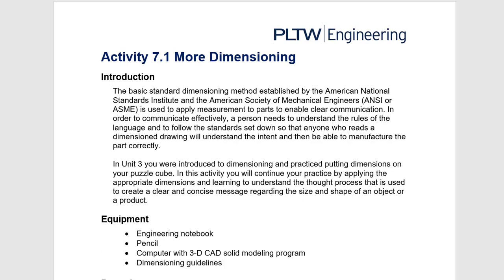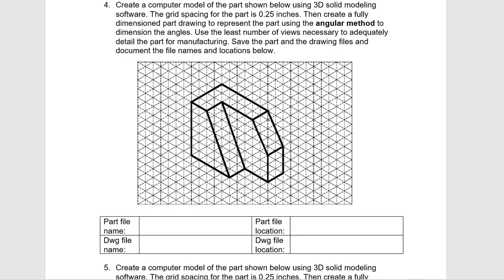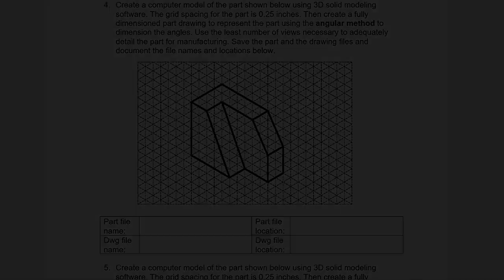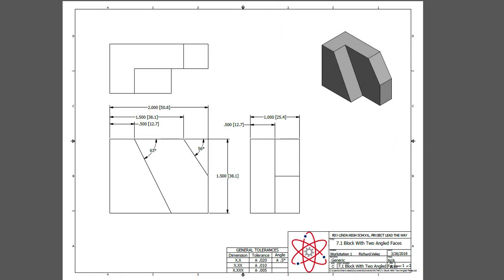In this video we're going to work on activity 7.1, more dimensioning. In particular we're going to work on this part, part number four. It's on page three and we're going to dimension the part using the angular method. We'll create this part and this drawing.